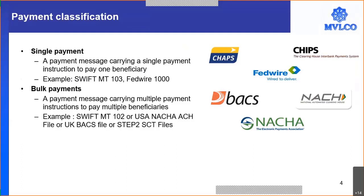In addition to single payment, you could have bulk payment. A bulk payment is a payment message carrying multiple payment instructions to simultaneously pay multiple beneficiaries. A simple example is Infosys making salary payments to thousands of employees. Instead of sending thousands of individual payment messages to the bank, Infosys can upload a file containing all employee details — name, bank, account number, payment date, and amount — and the system carries out the payment, paying multiple beneficiaries simultaneously.